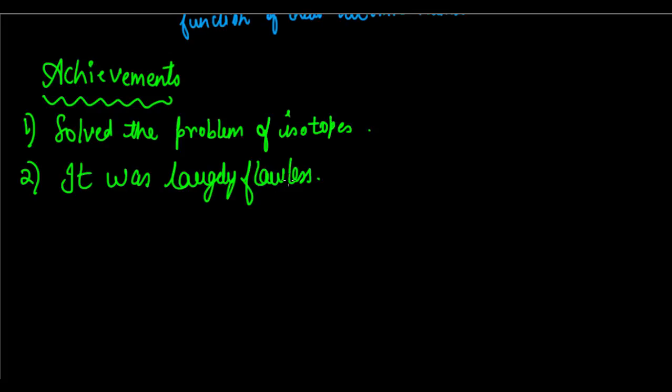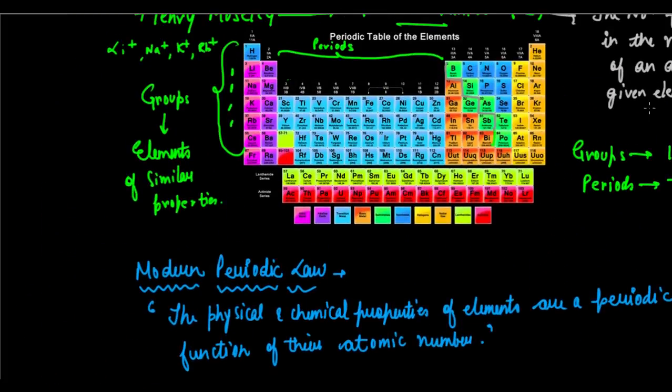Whenever there was some new discovery, it could be fit in somewhere or the other, and largely it was a flawless table — there was proper classification and proper arrangement of elements. Although it involved inputs from Dobereiner and Newlands as well — for example, the eighth element rule applies till calcium — it is the accumulation of all the efforts of different scientists over years and years, but ultimately it yielded fruit with a largely flawless table.